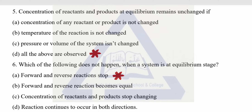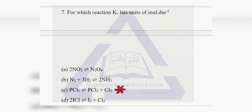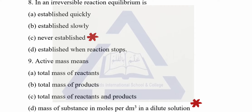Number six — which of the following does not happen when a system is at equilibrium state? Option A is correct: forward and reverse reactions stop. MCQ number seven — for which reaction does Kc have units of moles per cubic decimetre? Solve this on your notebooks; option C is correct. Number eight — in an irreversible reaction, equilibrium is: option C is correct — never established. Number nine — active mass means: option D is correct — mass of substance in moles per cubic decimetre in a dilute solution.